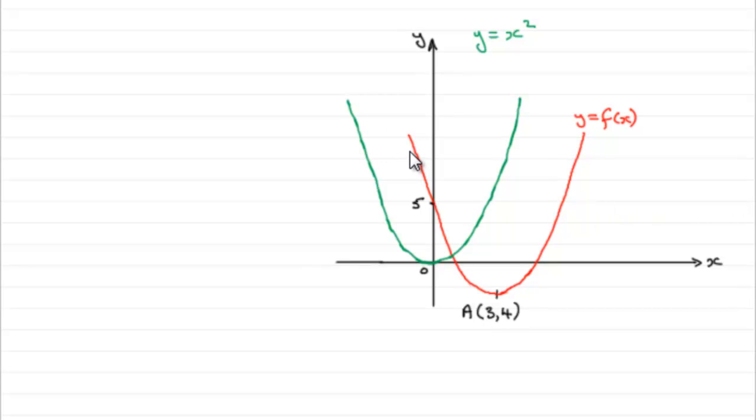Well, you can see it's a translation because if we take this graph here, we can just simply slide it across. Let's just try that. Slide it across to the right three places and then move it down four places and it would land on the original graph.